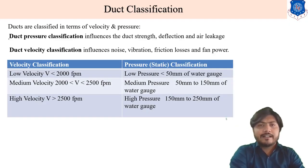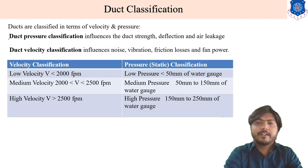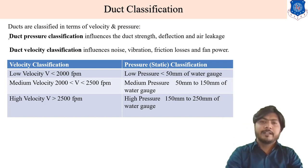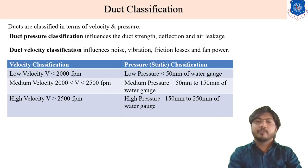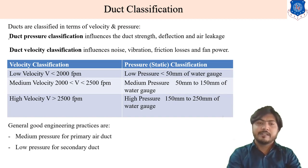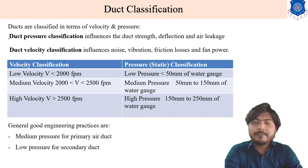According to velocity, ducts are three types: low velocity, medium velocity, and high velocity. According to pressure classification, ducts are classified into three types: low pressure (less than 50 mm water gauge), medium pressure (50 mm to 150 mm water gauge), and high pressure (150 mm and above). In good engineering practice, medium pressure is used for primary air ducts and low pressure for secondary ducts.